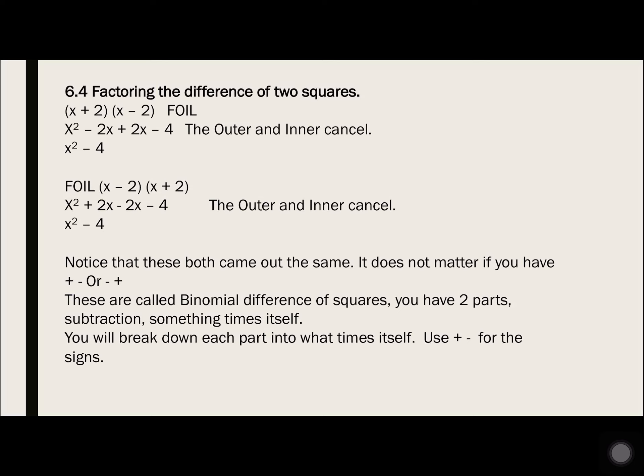Now FOIL the second problem: x minus 2 times x plus 2. First, x times x is x squared. Outside, x times 2 is 2x. Inside, negative 2 times x is negative 2x. Last, negative 2 times 2 is negative 4. The outside and inside cancel — 2x minus 2x is 0 — so we have x squared minus 4. Notice both came out the same. It does not matter if you have plus-minus or minus-plus, because it's the same problem just switched around. When you're multiplying, you can multiply in any order as long as the things are the same.